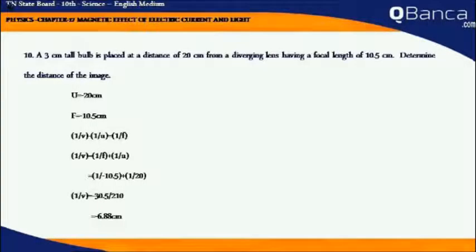A 3 cm tall bulb is placed at a distance of 20 cm from a diverging lens having a focal length of 10.5 cm.